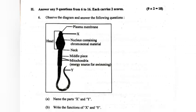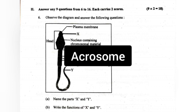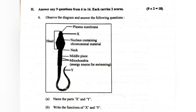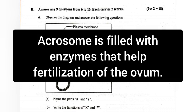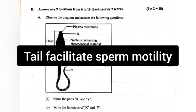6. Observe the diagram and answer the following questions. A. Name the parts X and Y. Answer: X — Acrosome, Y — Tail. B. State the function of X and Y. Function of X: Acrosome is filled with enzymes that help in fertilization of the ovum. Function of Y: Tail facilitates sperm motility.